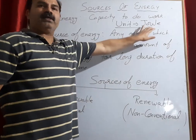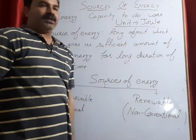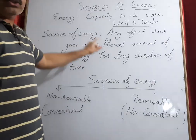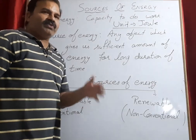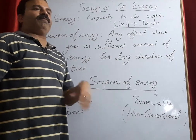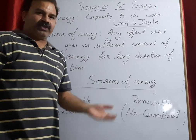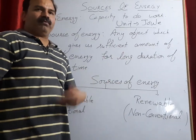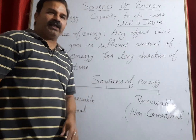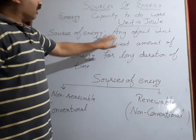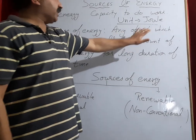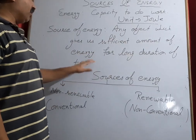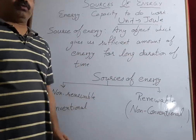Now we have to start with a source of energy. What is a source of energy? We always get energy from some type of object. Here we have to study what are the different objects from which we get energy. Any object which gives us a sufficient amount of energy for a long duration of time is called a source of energy.